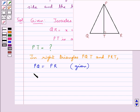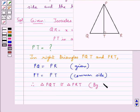And side PT is equal to PT since it is the common side for both the triangles. So therefore triangle PQT is congruent to triangle PRT by the RHS criteria.